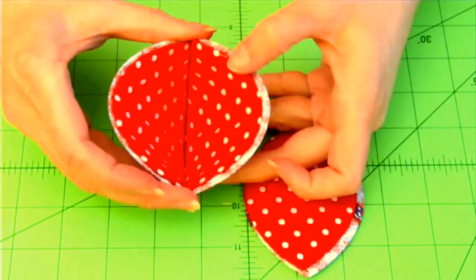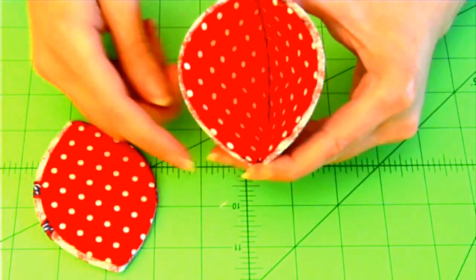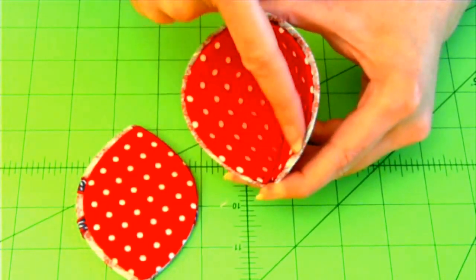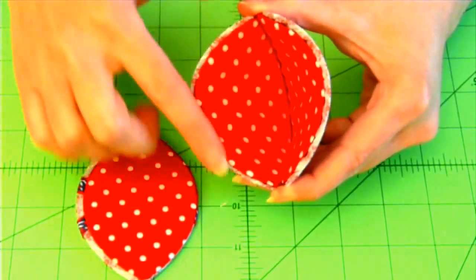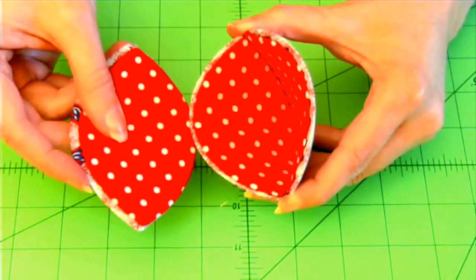We can easily see which edge to sew this other side to because this edge has a wider border of the outside fabric and this side has a narrower border. This is where we're going to sew this piece here.